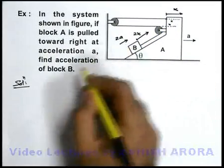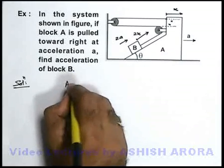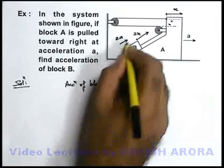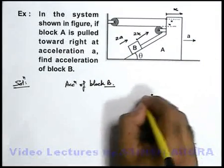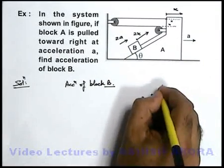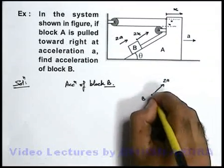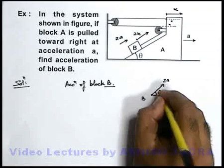So if we talk about the acceleration of block B, we can simply state acceleration of block B can be calculated by vector sum of these two accelerations. Because if this block B is going along the surface of A with an acceleration 2a, which is at an angle theta with the horizontal.